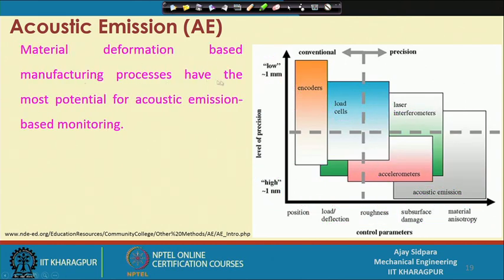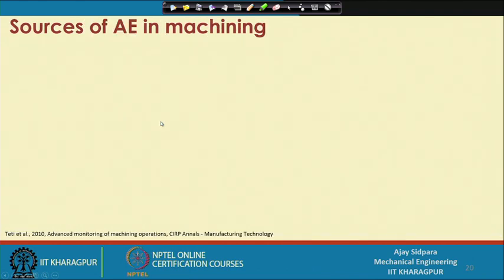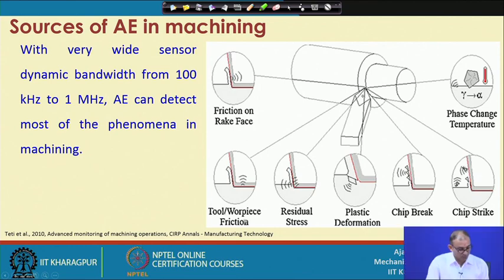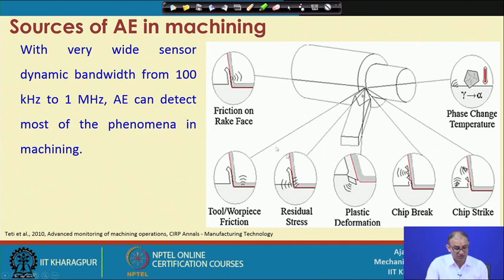Material deformation-based manufacturing processes have the most potential for acoustic emission-based monitoring systems. The different sources of acoustic emission in machining include: friction on the rake face as chips flow, friction on the flank surface, residual stresses, plastic deformation, chip breaking, chip striking — especially at high speeds with brittle materials producing discontinuous chips — and phase changes at high machining temperatures. The acoustic emission sensor covers a bandwidth from 100 kHz to 1 MHz, covering almost all phenomena in machining operations.